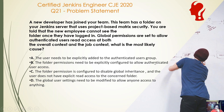Option B is obviously true, but not just for authenticated users — everyone with that global permission would get access. What we actually need is option C: the folder permission is right now configured to disable global inheritance, and the user does not have explicit read access to the concerned folder. The user is part of the authenticated group and that group was given global access, but since this particular folder is configured to disable global inheritance, the user has no access to that folder.